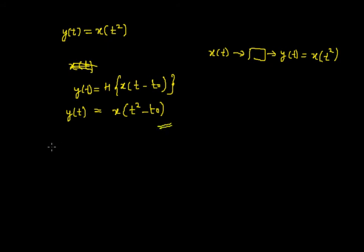In the second half we will consider a shift in the output. I will delay the output by t₀: y(t - t₀). For that I already have the expression for y(t) which equals x(t²). So in that expression to get y(t - t₀) I have to replace t with t - t₀.